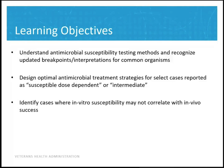Things I want to go over today: understanding the antimicrobial susceptibility testing methods and highlighting some of the updated breakpoints and interpretations for common organisms that have come out within the last year or so. We'll design an optimal treatment strategy for select cases reported as intermediate or susceptible dose-dependent, and identify cases where in vitro susceptibility may not always correlate with in vivo success — essentially, when the C&S report is lying to you.